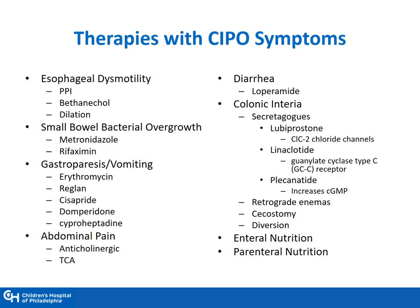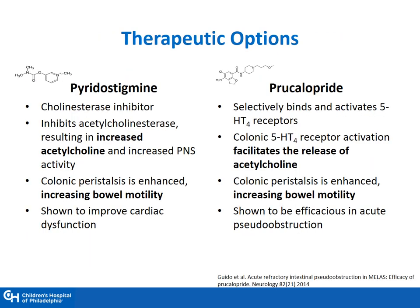Various therapies can be used for patients who present with SIBO or pseudo-obstruction symptoms. A variety of different medications can be used, and most importantly, some degree of enteral nutrition is needed to build up the body and prevent malnutrition — and at times, parenteral nutrition. Therapeutic options include pyridostigmine and prucalopride, which both help increase acetylcholine and increase bowel peristalsis, increasing bowel motility. Both have been efficacious in patients with mitochondrial disorders.